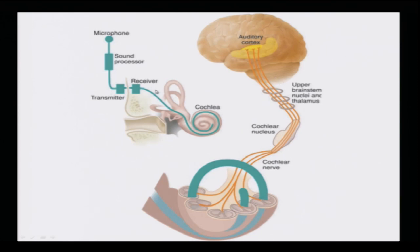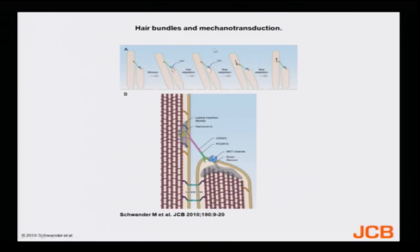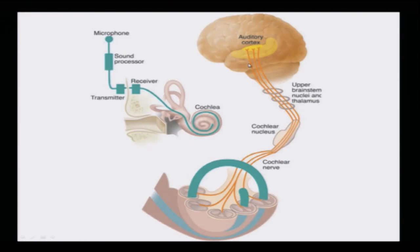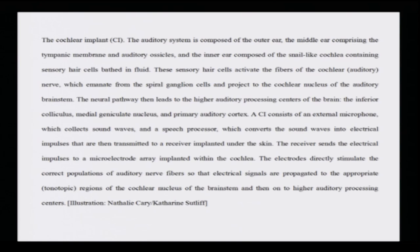Essentially, what you are doing is bypassing the damaged hair cells — if the hair cells are all damaged, you feed the sound information directly to the cochlear nerves. The cochlear nerves take the whole information through the cochlear nucleus to the auditory cortex of the brain where it is processed. You are bypassing the whole cochlea.